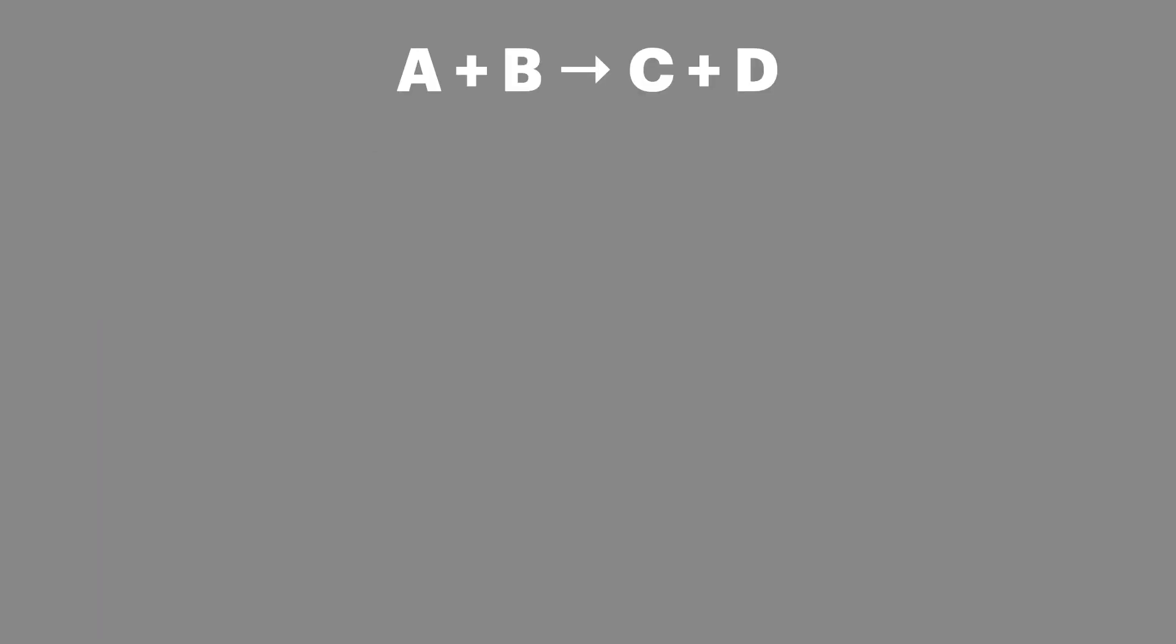We'll start by taking a look at a simple reaction of reactants A and B forming products C and D. If we change the concentrations of reactants it will have an impact on the rate.